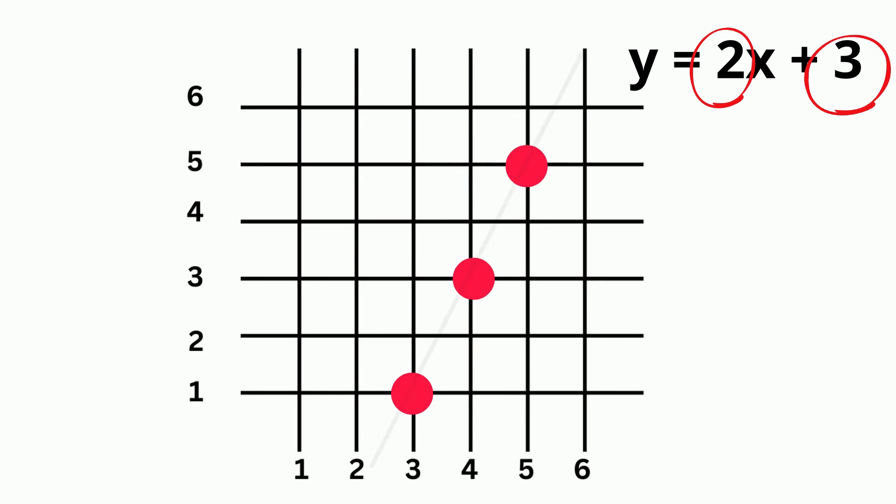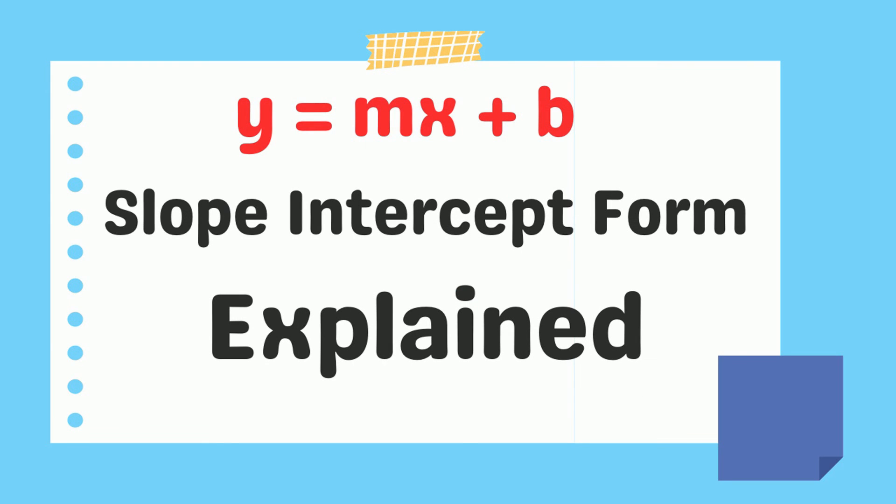The slope-intercept form is a very useful way of writing down the equation of a line. It is easy to understand. It is easy to use to graph a line.